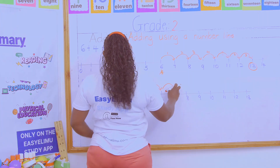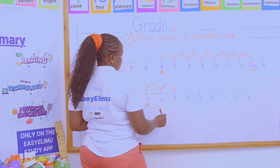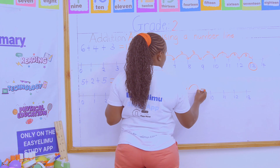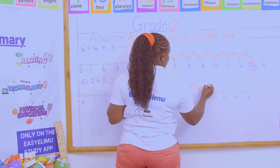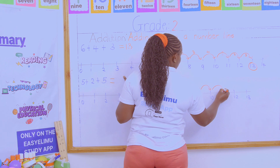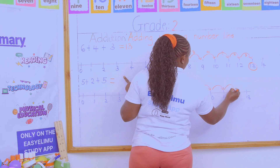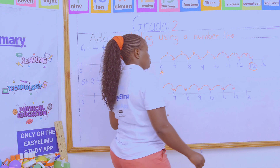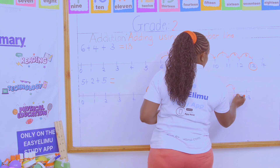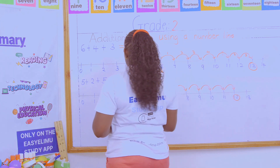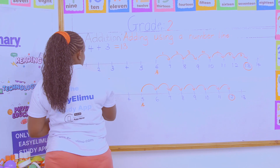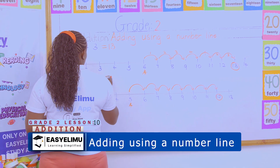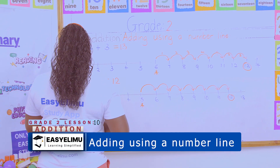Then we move again — five steps: one, two, three, four, five. Where did you stop? We stopped at 12. In other words, five plus two plus five gives us 12.